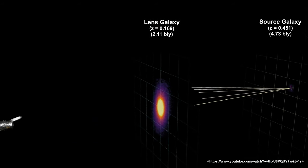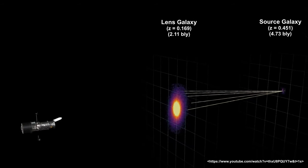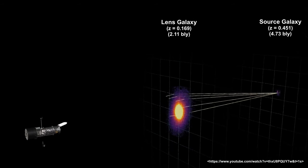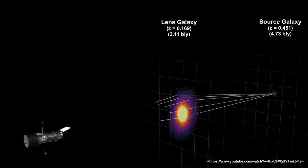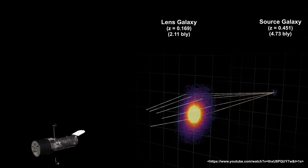We start with the distant galaxy, 4.7 billion light years away. The light from this object passes through the galaxy Abel 1201, 2.1 billion light years away.